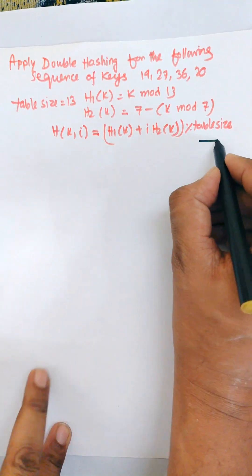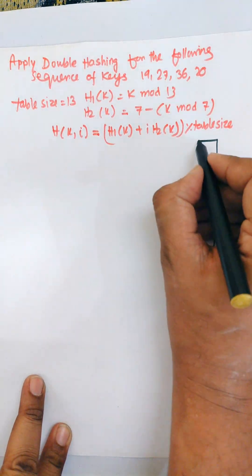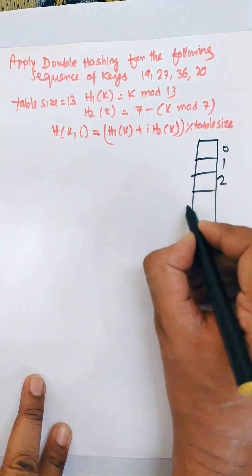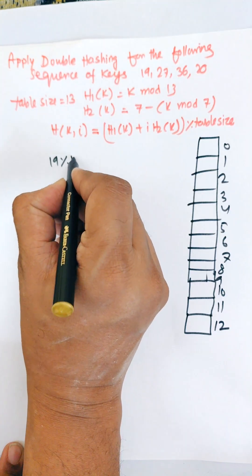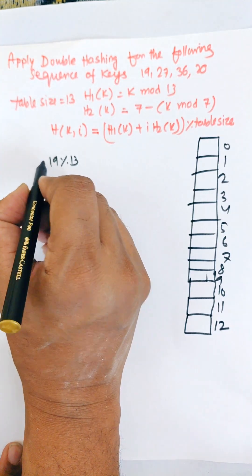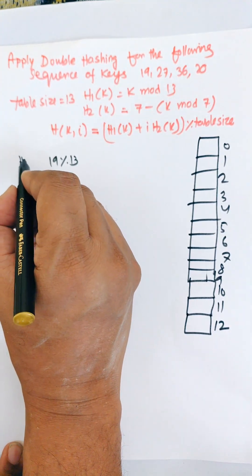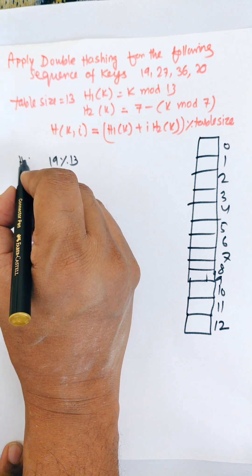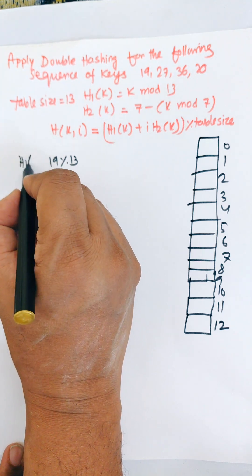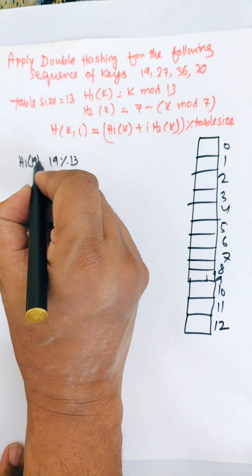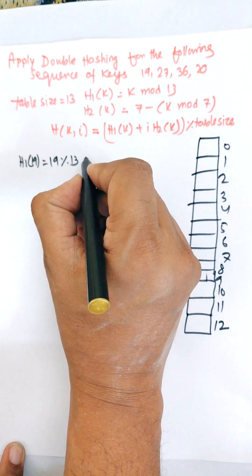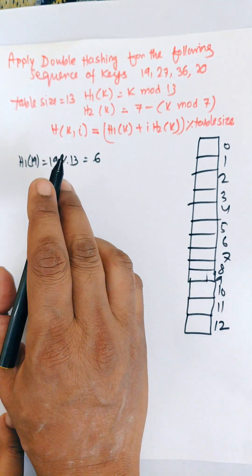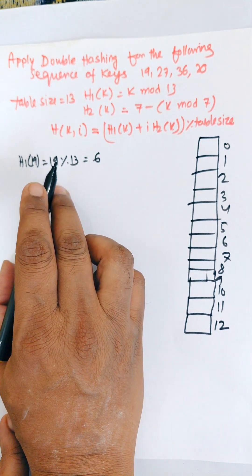There are 13 memory locations, storing from index 0 to 12. First, we apply h1(key). For key 19: h1(19) = 19 mod 13, and the remainder is 6, so 19 will be stored in location 6.